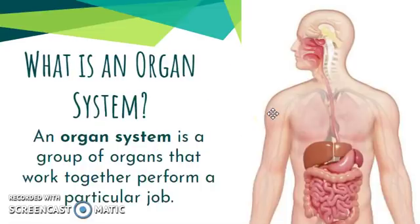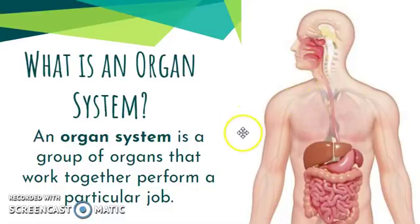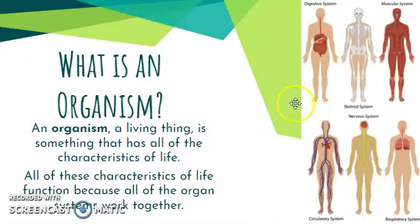Those organs build together to make organ systems, like the digestive system. An organ system is a whole group of different organs — like your small intestine, large intestine, stomach, liver, gallbladder, pancreas, esophagus, mouth, and glands — all working together to digest your food and allow your body to absorb nutrients. When you put all the different systems of your body together — and these are just six we'll focus on more later in the year — all of those systems put together make the organism. When that organism has all the characteristics of life, it is called a living thing. All the characteristics of life work because of the organ systems working together to make the organism do its job.